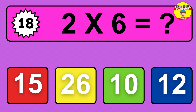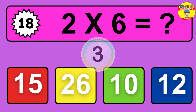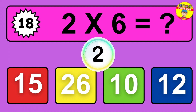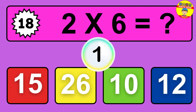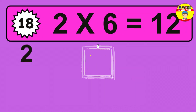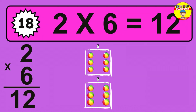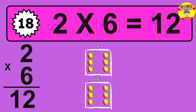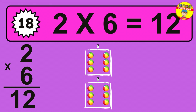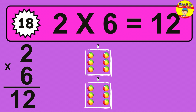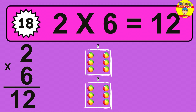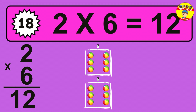Question 18. 2 times 6 equals what? The answer is 2 times 6 is 12. To calculate, we have 2 groups with 6 balls each one. So, how many balls do we have? 12 balls.